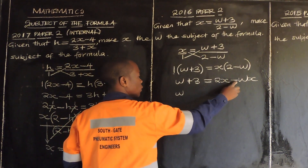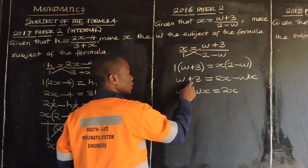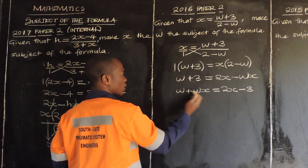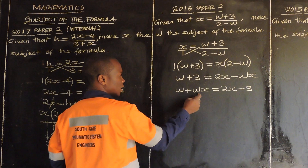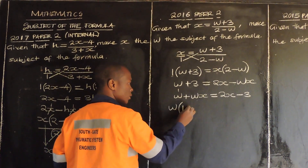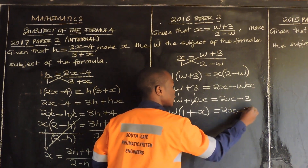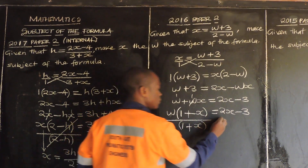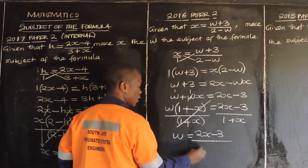So we have w this side, and positive wx on the other side, is equal to 2x. Then positive 3, when transposed, becomes negative 3. So w plus wx equals 2x minus 3. At this level, since we have grouped the w terms together, we factorize — factor out w since it is common. So w open brackets: 1 plus x is equal to 2x minus 3. Then divide both sides by 1 plus x. So w is equal to 2x minus 3 over 1 plus x. This is our answer.